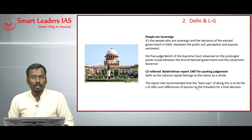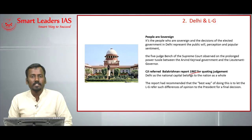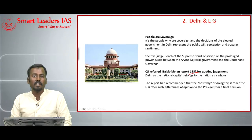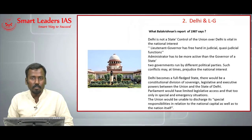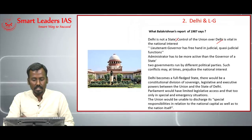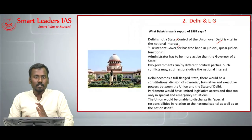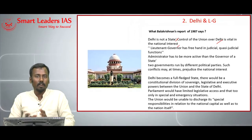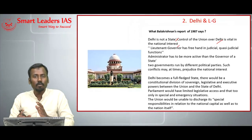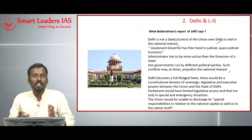The CJI, while offering the verdict, referred to the Balakrishnan Report of 1987, which stated that Delhi is not a state but a special territory accorded national capital region status. Control of the Union over Delhi is vital in the national interest. When two different parties run the Delhi Government and the Central Government, it is bound to create dissent, which is not good for a region housing important offices of the country and would prejudice national interest.